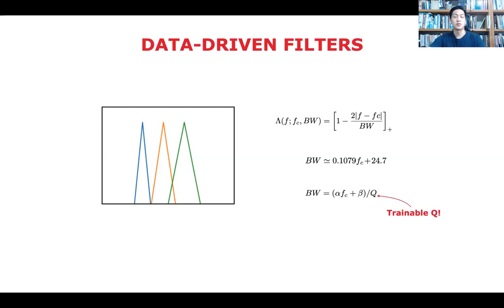From the equation, center frequencies Fc and hyperparameters alpha, beta, and Q can all be trainable. But in our study, we only let the center frequencies Fc and the scale parameter Q to be trainable. And we set the value alpha and beta to be 0.1079 and 24.7 respectively, which are values of the equivalent rectangular bandwidth.